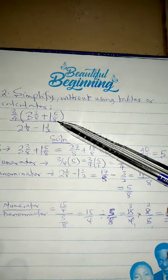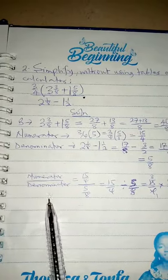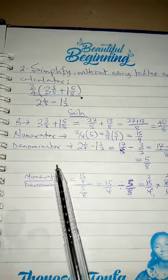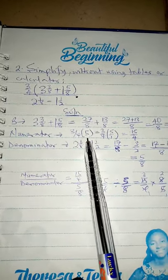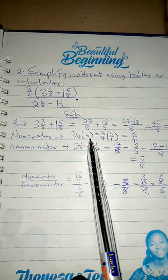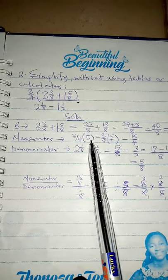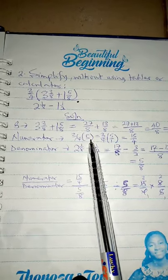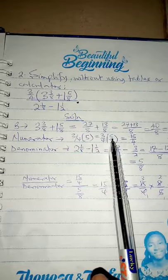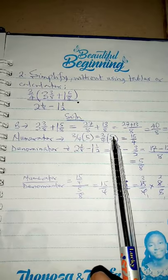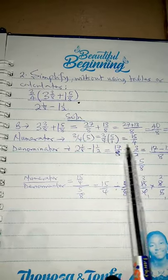Take out the numerator: it is now three-quarters times your bracket answer of 5. Five is 5 over 1. So three times five is 15, and four times one is 4. The numerator gives 15 over 4.